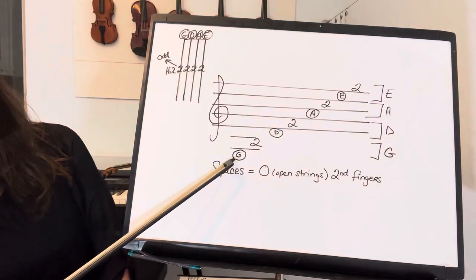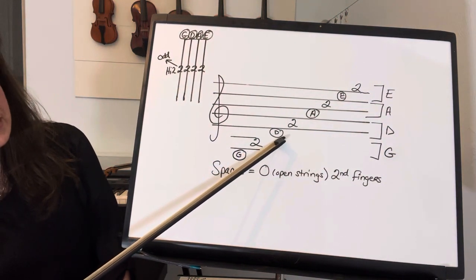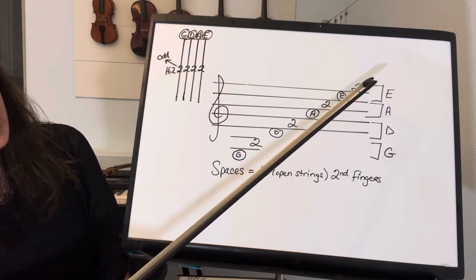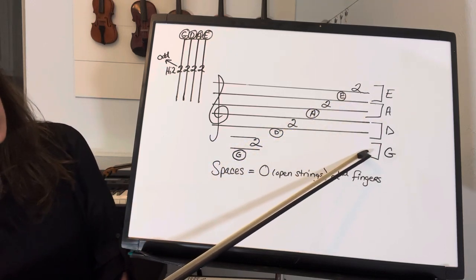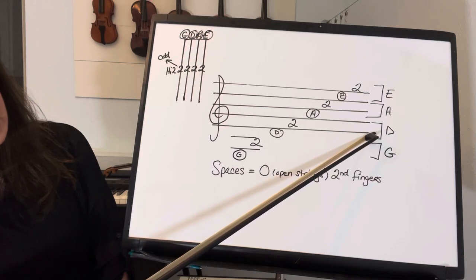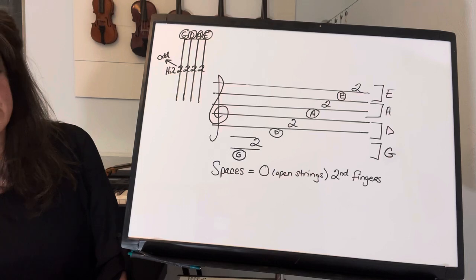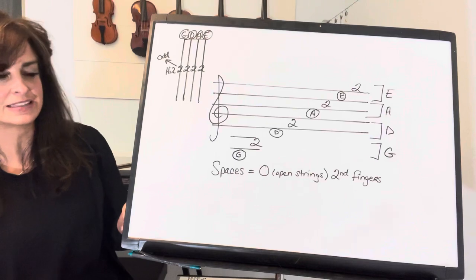If you look at our staff here, you'll notice that the spaces are going to be open and two - open strings and second finger. Open G, 2 on G which is a space, open D, 2 on D space, open A, 2 on A, open E, 2 on E. The staff is set up with our lowest string G off the staff, D in the lower part, A middle staff, and E at the top. Space equals opens and twos.